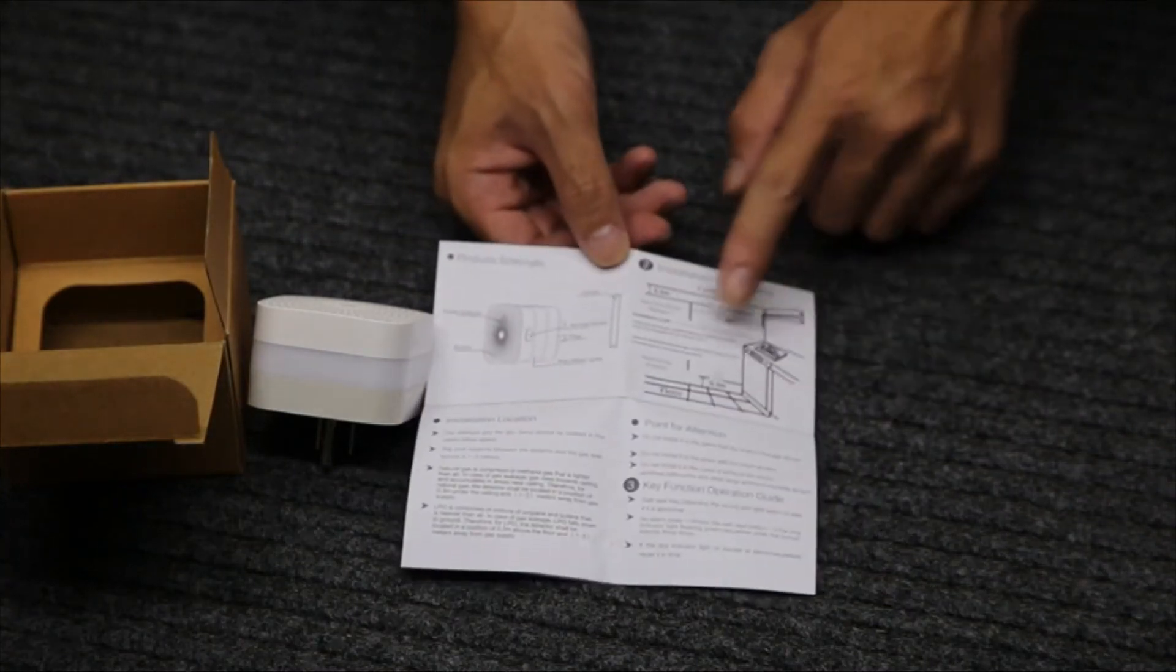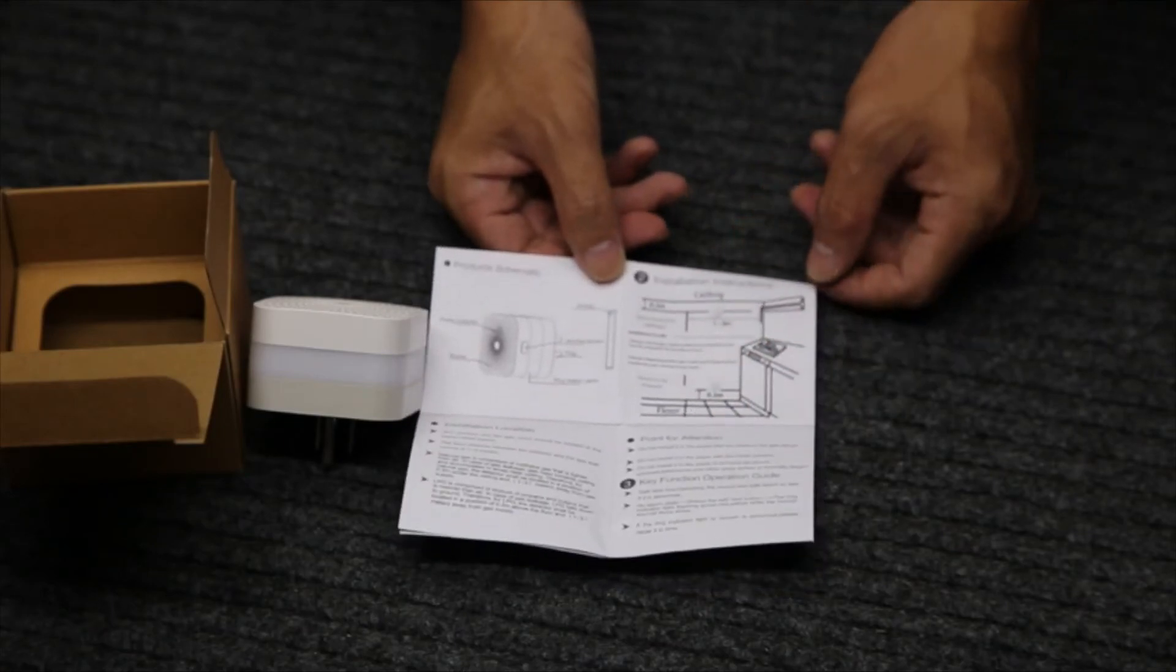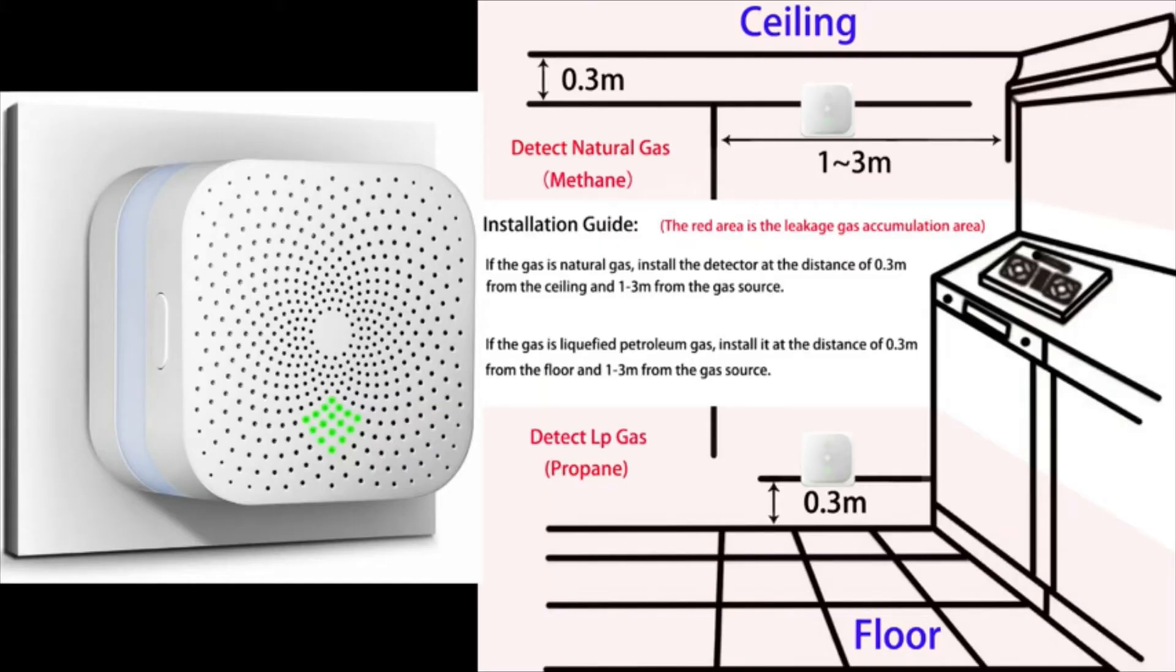So where to install it depends on which kind of gas you are using. For natural gas, install the detector at the distance of one foot from the ceiling and three to nine feet from the gas source.